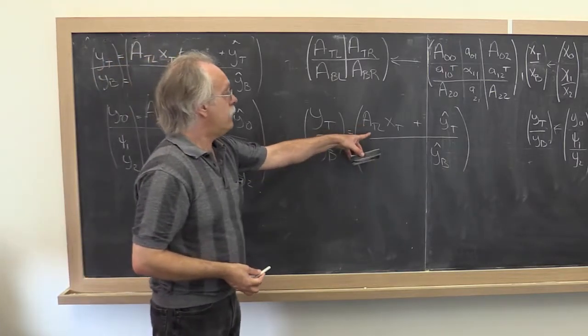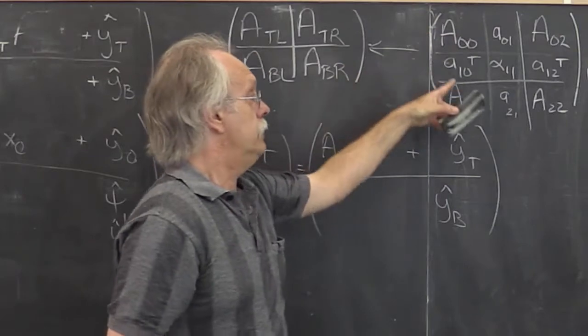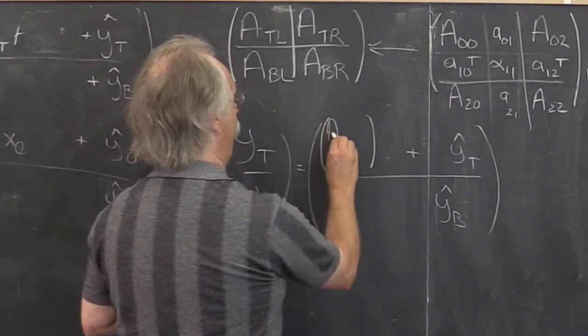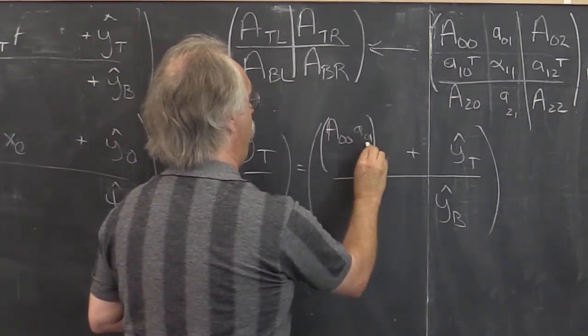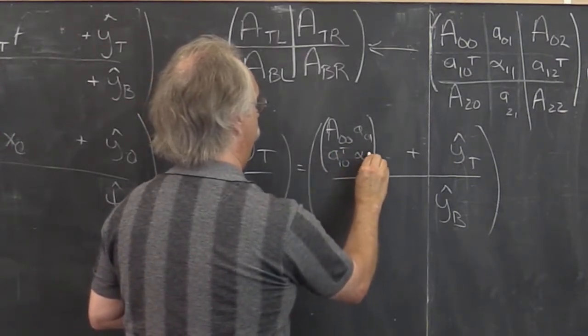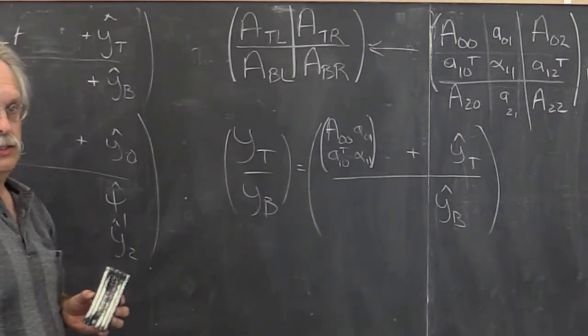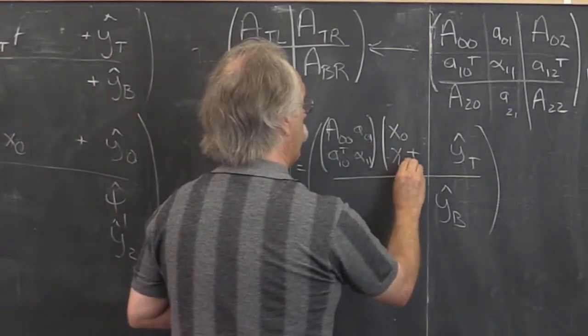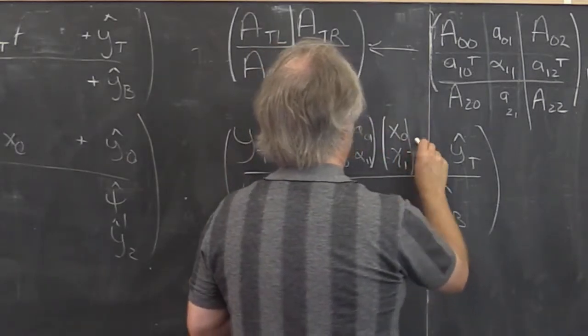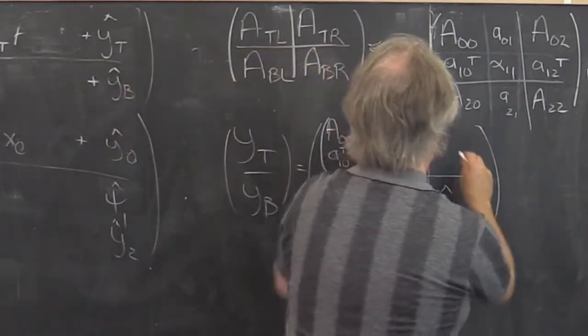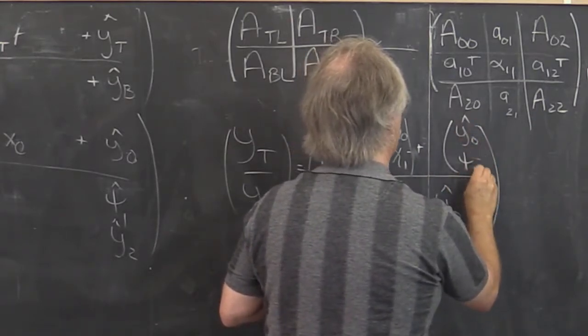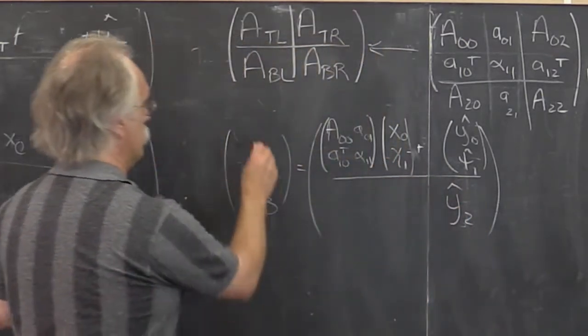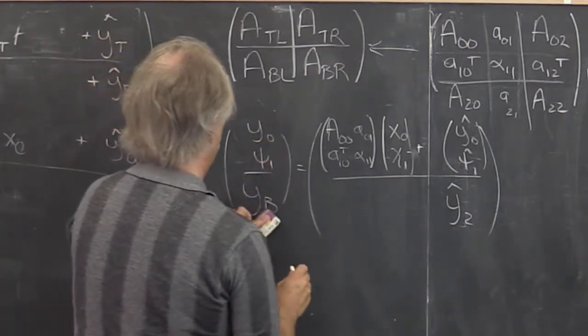Now, however, a top left has become this sub matrix right here. So we do a textual substitution. And then we need to multiply that times x zero by one. We need to substitute in y zero hat psi one hat. This becomes y two hat. This becomes y zero psi one. And this becomes y two. Now there's one catch.